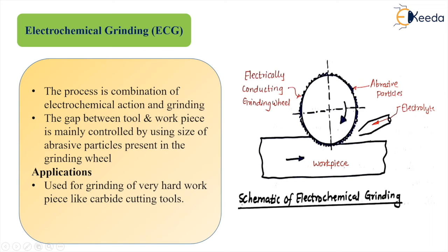An extension of ECM is Electrochemical Grinding (ECG), which is suitable for regrinding of carbide tools. ECG is a combination of electrochemical and grinding operations. The gap between the tool and workpiece is controlled by the size of the abrasive particles on the grinding wheel. The grinding wheel is electrically conductive with electrolyte flow, and it is very commonly used for grinding hard workpieces like carbide cutting tools.